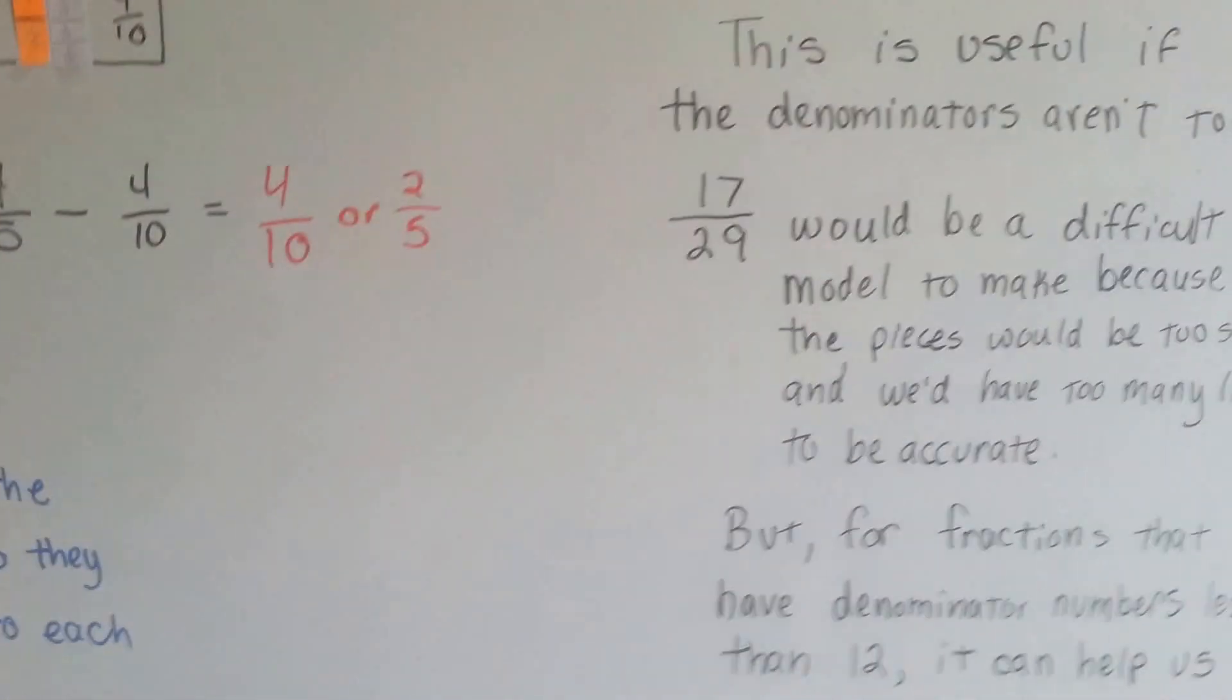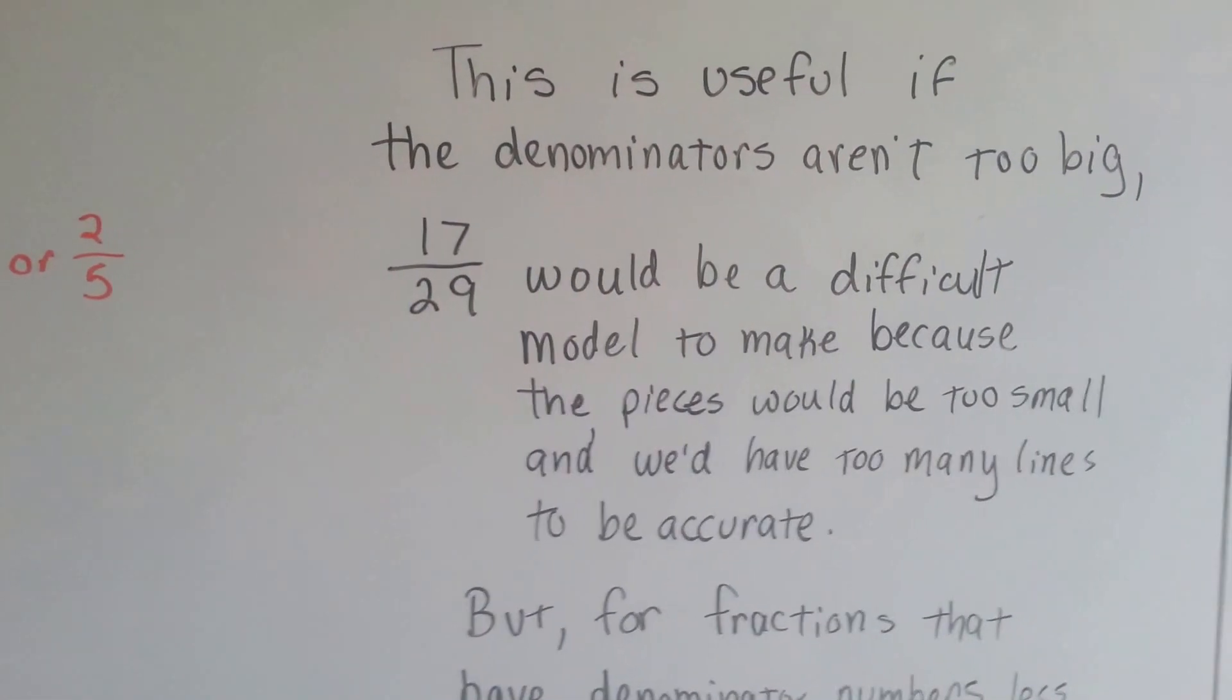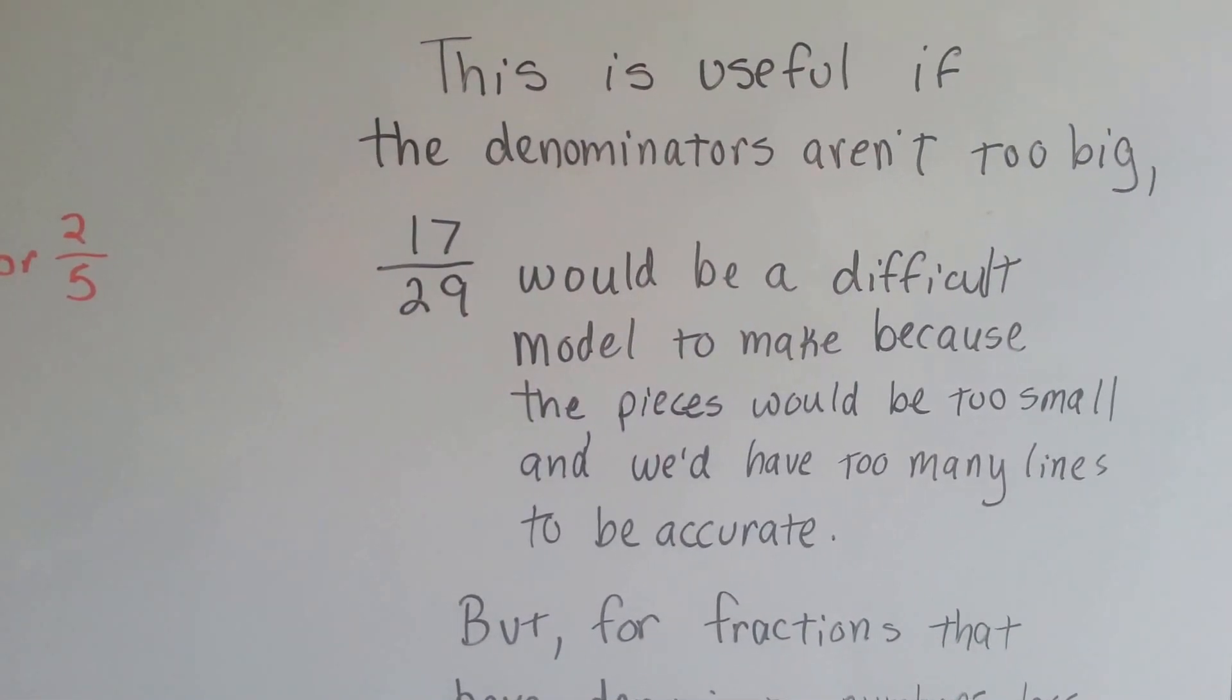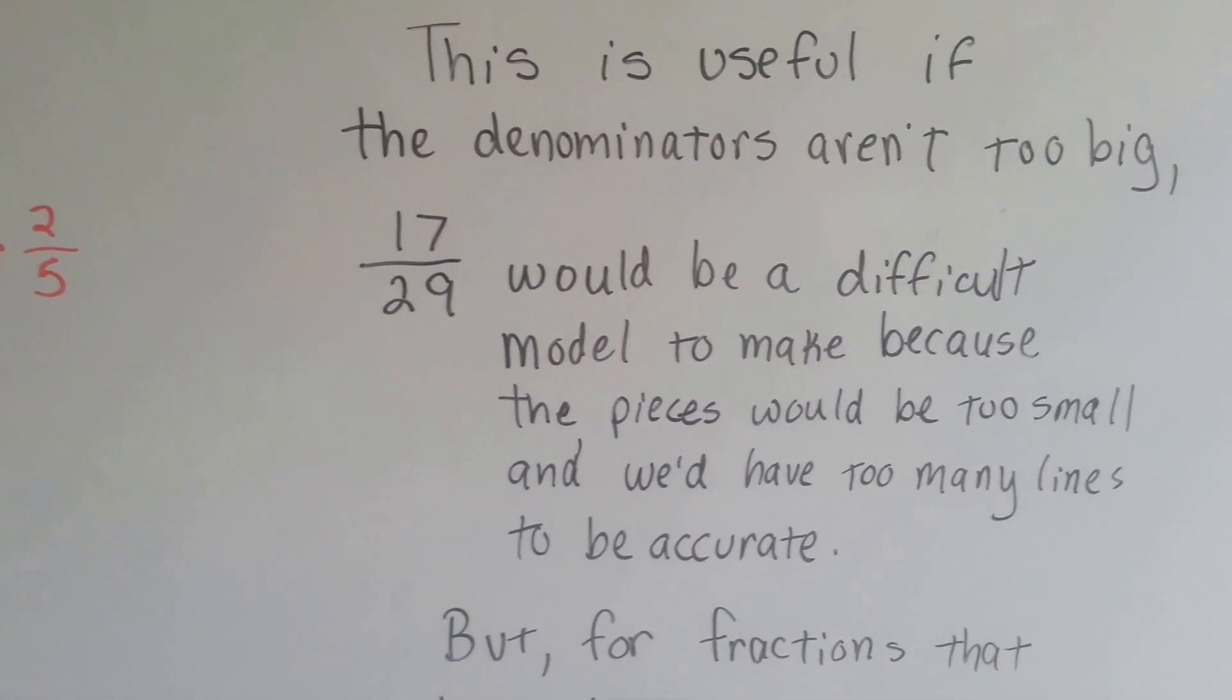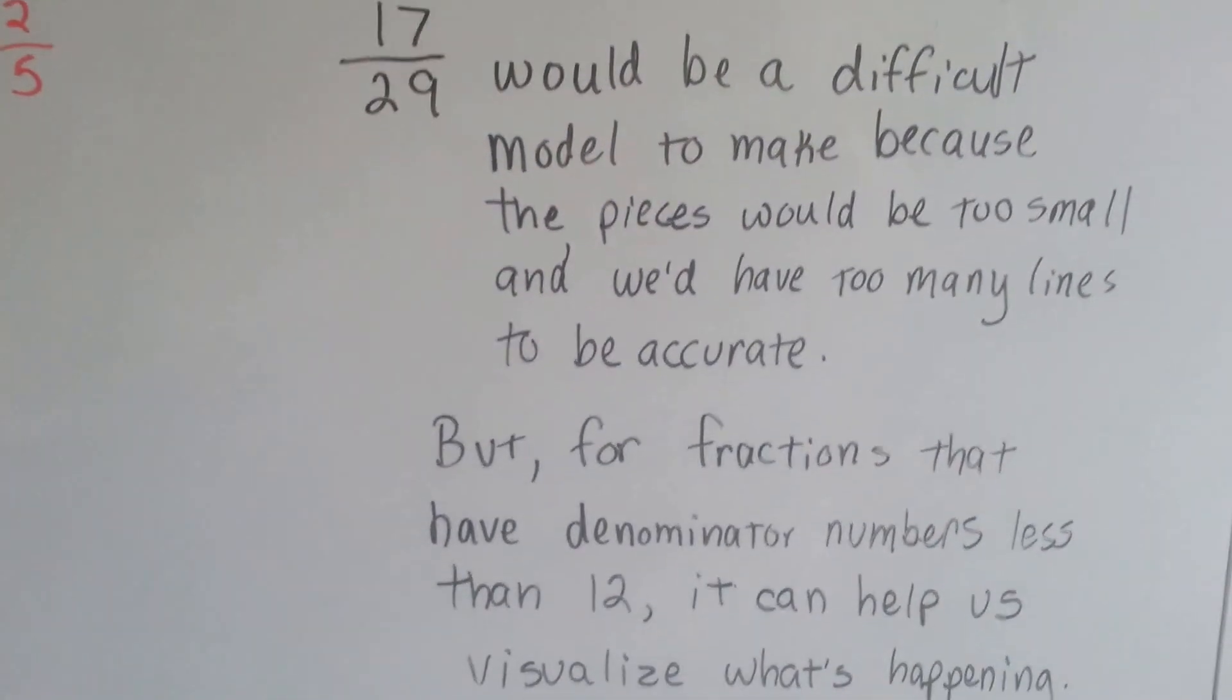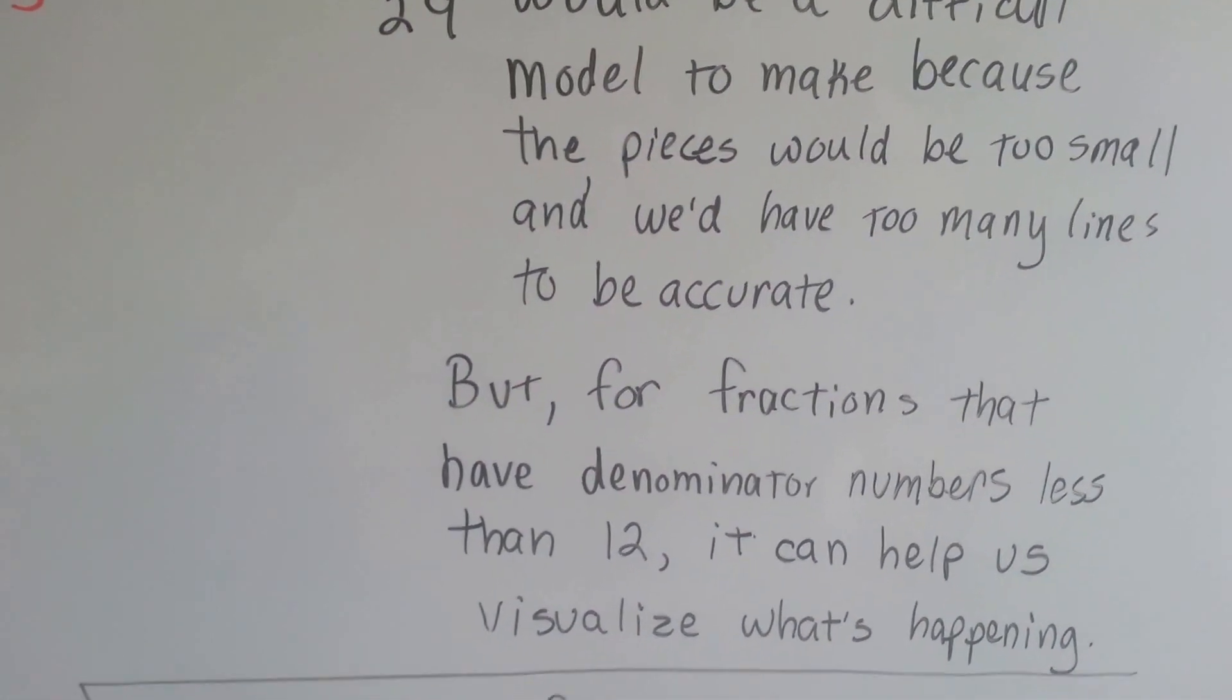So, this is useful if the denominators aren't too big. 17 29ths would be too difficult of a model to make because the pieces would be too small and we'd have too many lines to be accurate. But for fractions that have denominators less than 12, it can help us visualize what's happening.